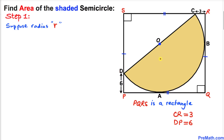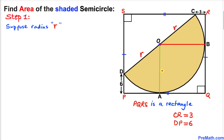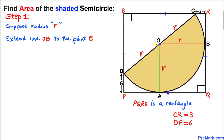Let's assume that the radius of this semicircle is lowercase r. This is radius r and this is radius r as well, and moreover this distance OA and this distance OB is going to be radius r as well.